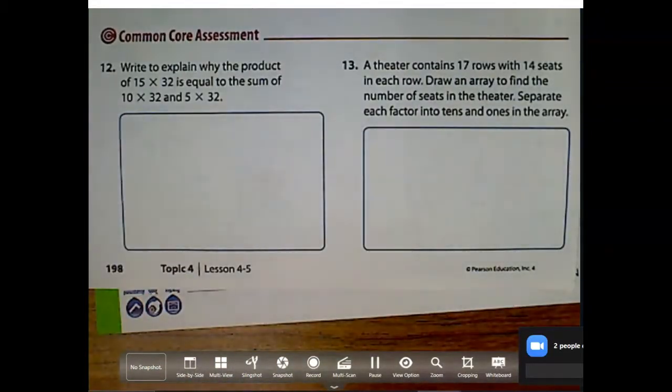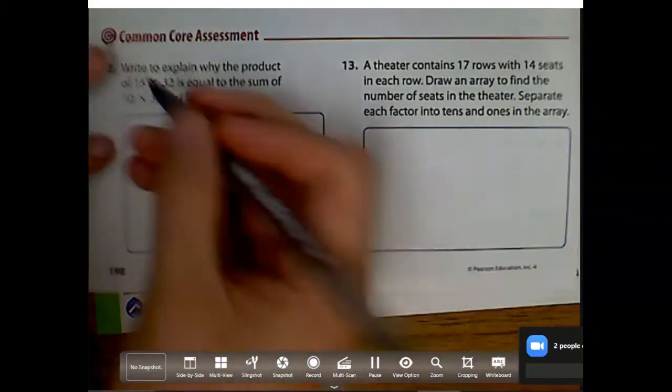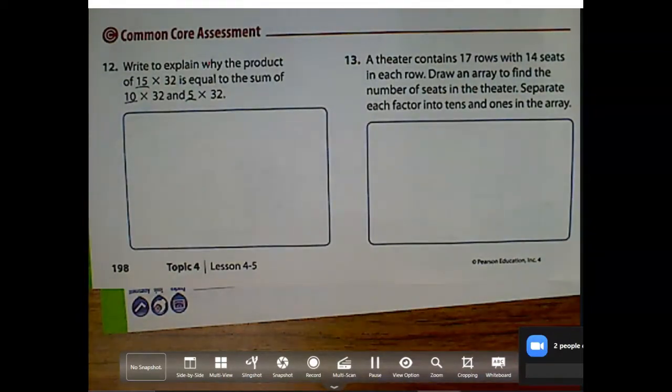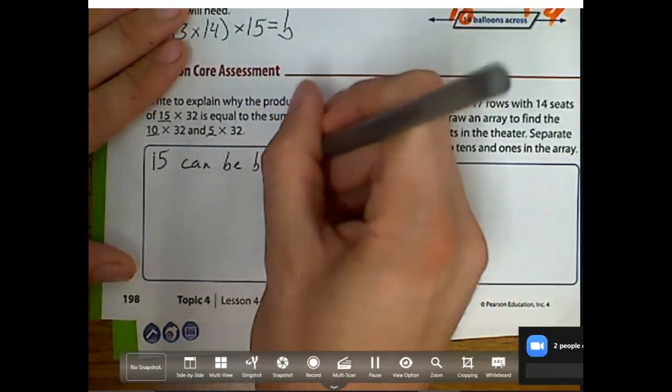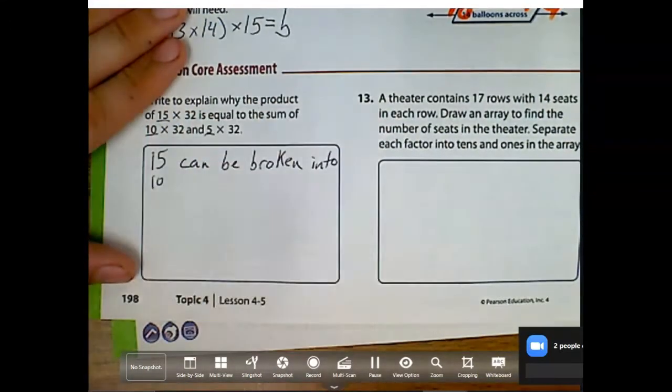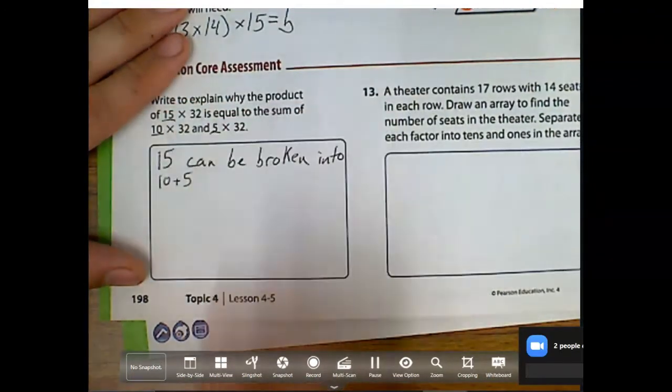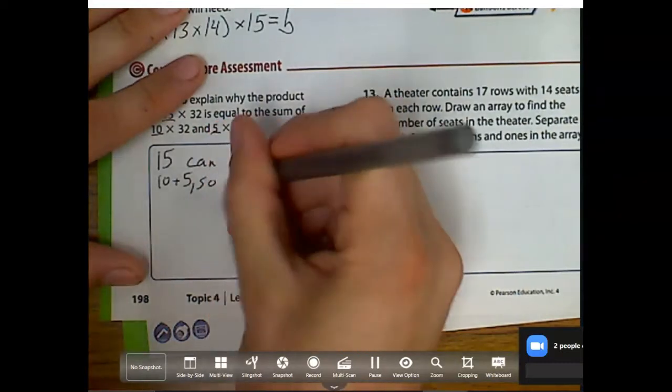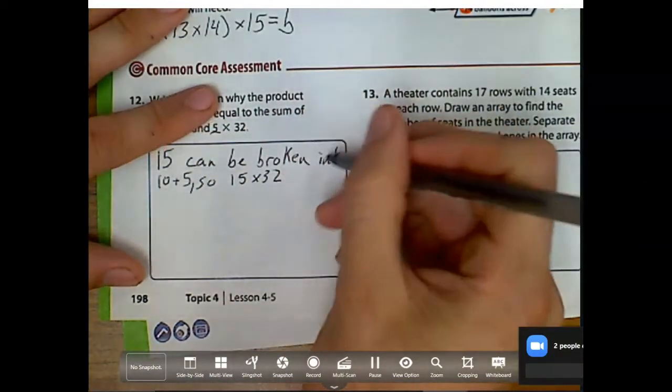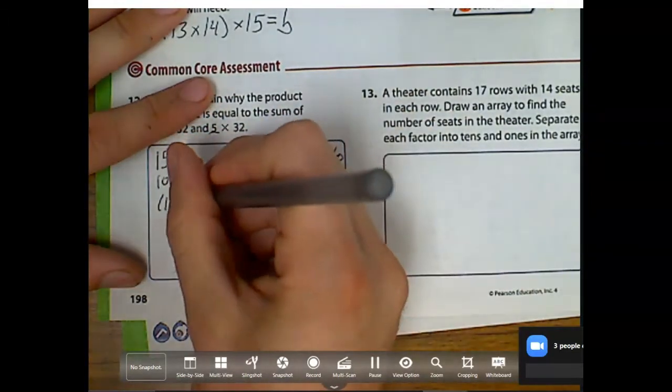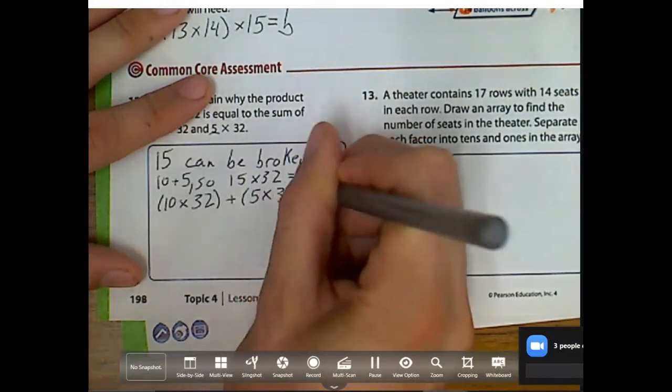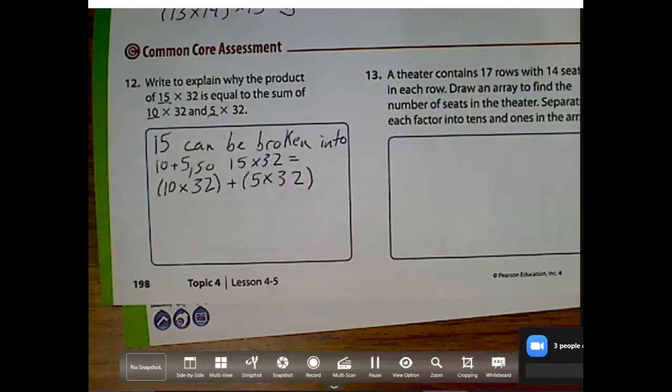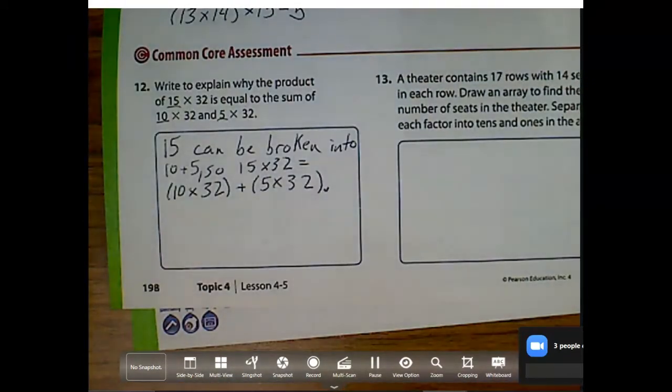Number 12 now, we have two more. Write to explain why the product of 15 times 32 is equal to the sum of 10 times 32 and 5 times 32. Well, before I even write, I notice 10 and 5 is equal to 15. That's kind of what I've been doing this whole time. So let's start there. We're going to say 15 can be broken into 10 plus 5. And then what do I know about that? So 15 times 32 can be what? Well, it can equal 10 times 32 plus 5 times 32. Now it's not, again, asking me to solve, it just wants me to explain why they are the same. So I'm actually done with that explanation.